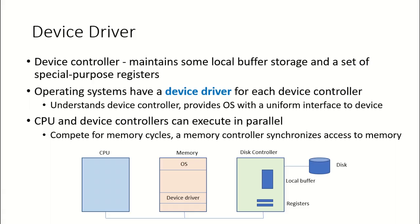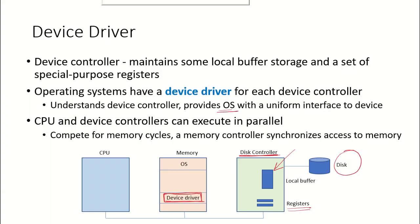Apart from the controller, there is a specific program known as the device driver, and there is a device driver for each kind of device controller. So suppose we have a hard disk with a disk controller — that disk controller would have some local buffer storage and a set of registers. The device driver understands the device controller and provides the operating system a means to communicate with the disk controller. So this device driver is an abstraction for the OS to handle the disk controller.